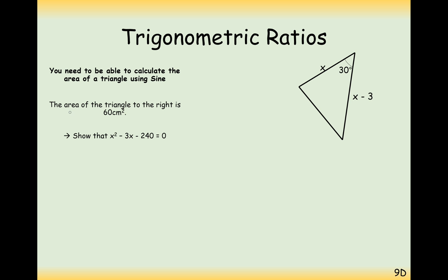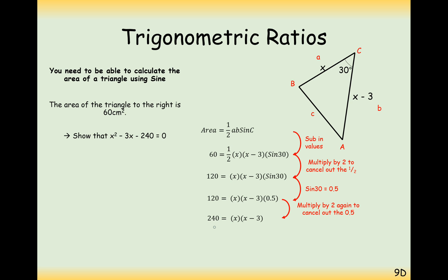A little bit more of a problem-solving type question here. The area of a triangle on the right is 60 centimetres squared. So we know the area is 60. Show that x squared minus 3x minus 240 equals 0. So what we need to do here is call this angle here C, A and B, and substitute it into the formula. And set the answer to that substitution in the formula equal to 60. And now we just need to expand some of the brackets. Simplify sine of 30 to a half and double it onto the other side to get our 240.